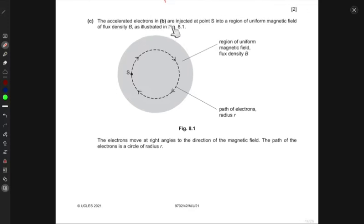Next, we have the accelerated electrons in part B are injected at point S into a region of uniform magnetic field of flux density B. This is the region of uniform magnetic field, and the path of electrons are moving in this direction clockwise. The electrons move at right angles to the direction of the magnetic field. Clearly, if the magnetic field is into the paper, they are moving at right angles to it. The path of the electrons is a circle of radius r.